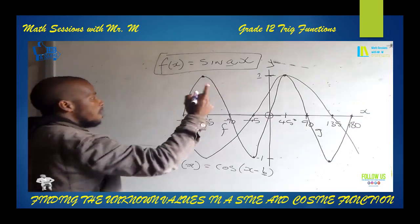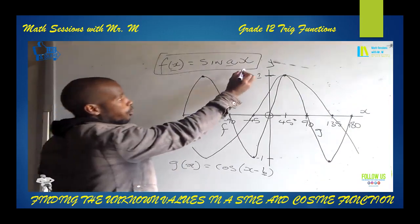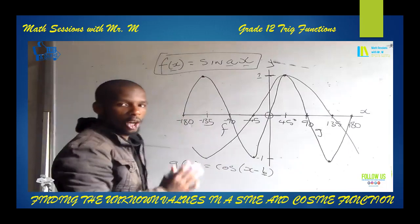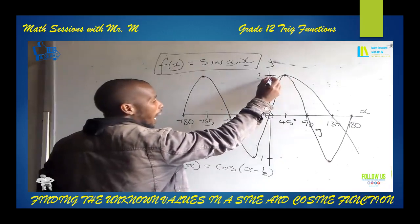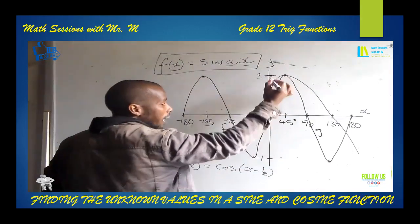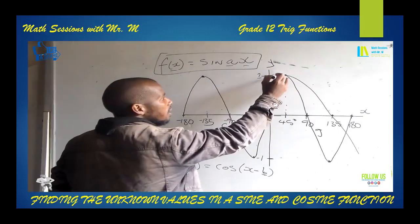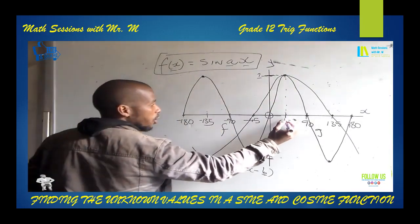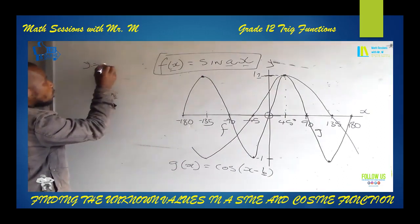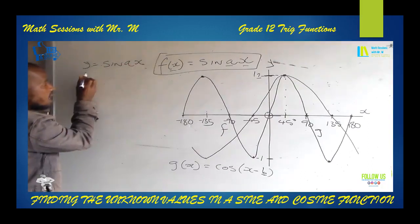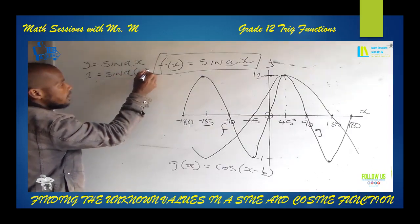Let's find A first using the sine graph. We need to find the variable for Y and the variable for X to find A, and we need a common point. By inspection, at Y equals 1 we have the point at 45 degrees and 1. So X is 45 degrees and Y is 1. We substitute: Y equals sine AX, so 1 equals sine A times 45 degrees.